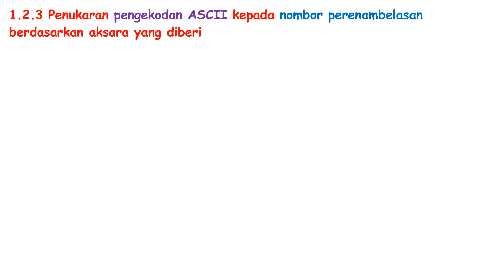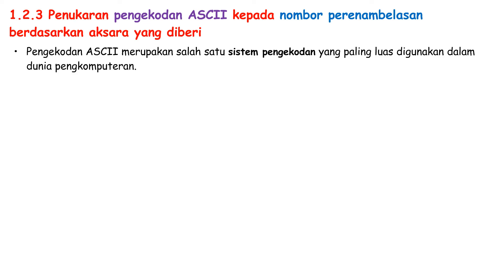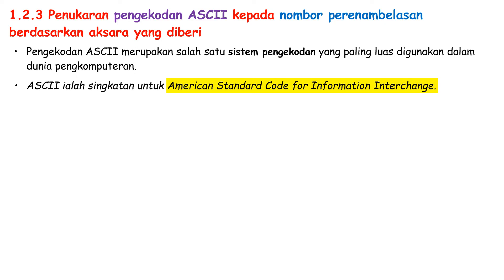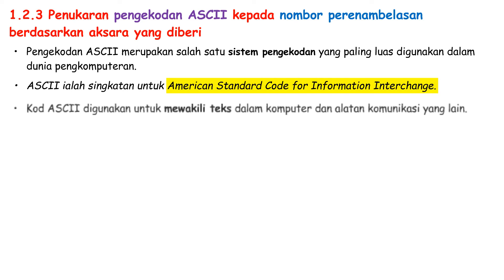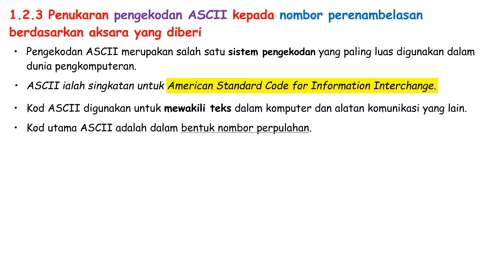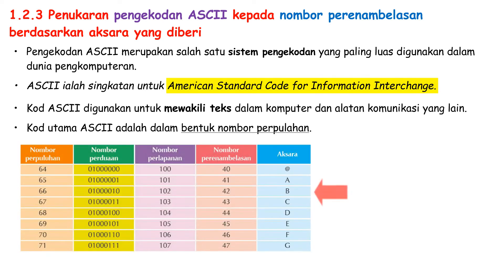After that, you will learn pengkodan ASCII to Nombor Perenamblasan based on the given Aksara. First of all, what is ASCII? Pengekodan ASCII is one of the most widely used system pengekodan in the world of computing. ASCII stands for American Standard Code for Information Interchange. Code ASCII are used to represent text in computers and other communication devices. The main code ASCII are in the form of Nombor Perpuluhan.